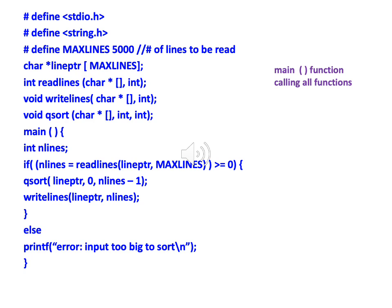Next we have our main data structure: an array of character pointers, which is capable of storing 5000 pointers, each pointing to a separate line. This is declared as char *lineptr[MAXLINES].